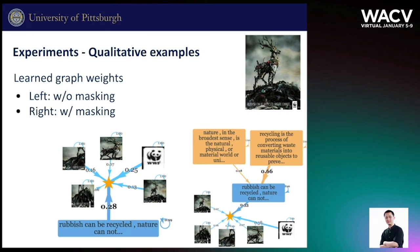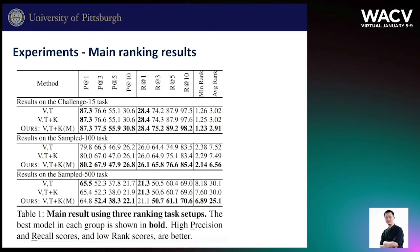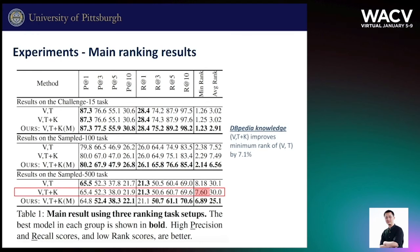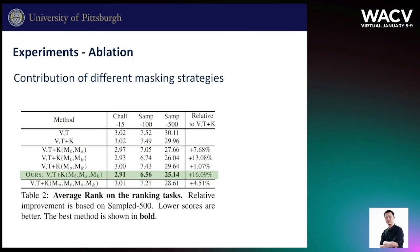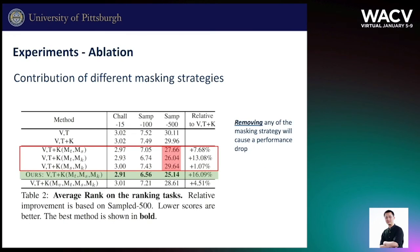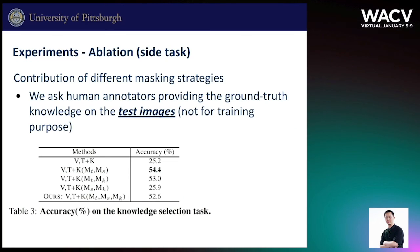In the experiments section, we first present qualitative examples. We show the learned graph without masking on the left and with masking on the right. We see that only with masking does the model consider external information. For the main ranking results, using DBpedia knowledge improves the minimum rank by 7%, and adding masking further improves performance by 9%. We show the contribution of different masking strategies and find that removing any masking strategy causes a performance drop. We further evaluate on the side task.